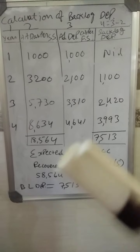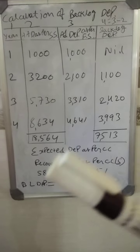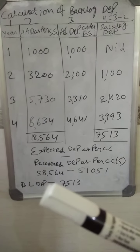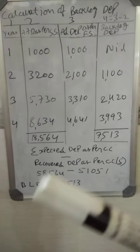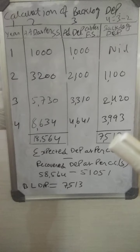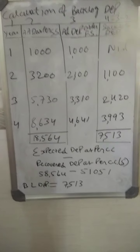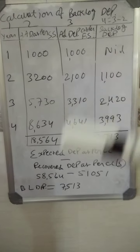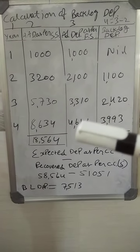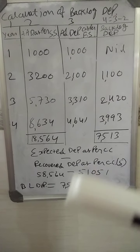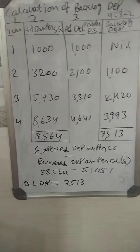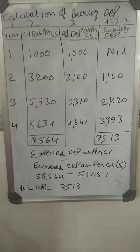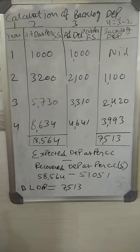The third column represents the difference between depreciation under the current cost method and the historical cost method. The third column difference amounts are: 1,000 for the first year, 2,100 for the second year, 3,310 for the third year, and 4,641 for the fourth year. Now we have to find out the backlog depreciation.